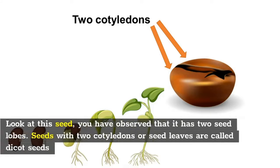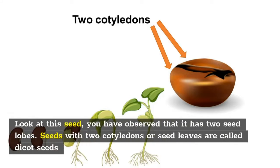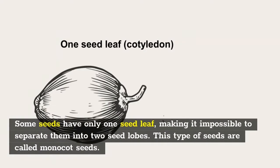Look at this seed — you can observe that it has two seed lobes. Seeds with two cotyledons or seed leaves are called dicot seeds. Some seeds have only one seed leaf, making it impossible to separate them into two seed lobes. This type of seed is called a monocot seed.